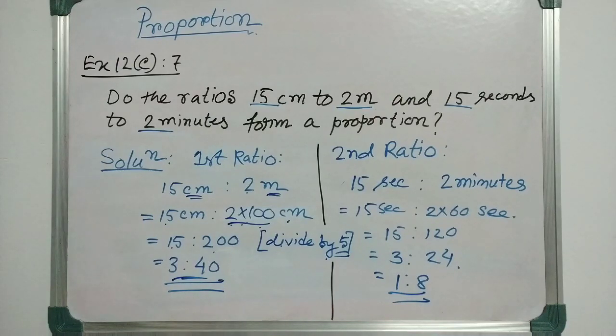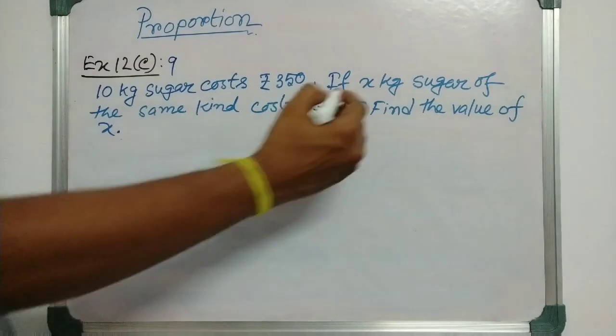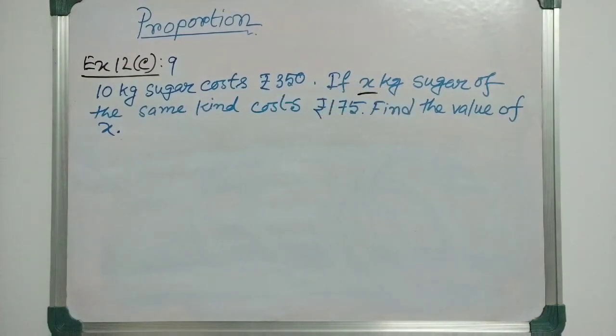So, that means they will not form proportion. Okay. Let us move to question number 9. The question is 10 kg sugar costs rupees 350. If x kg sugar of the same kind costs rupees 175, find the value of x.